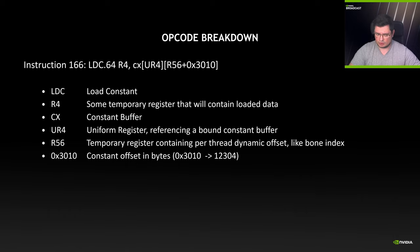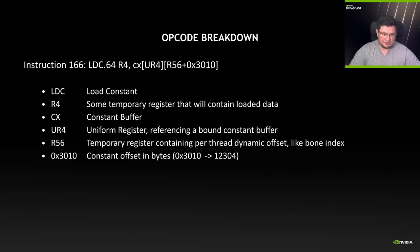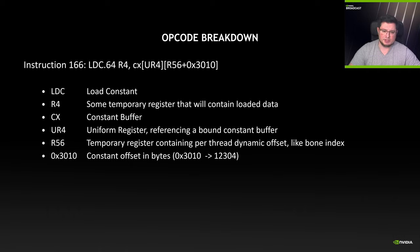LDC loads some kind of constant buffer into R4, while instruction 196 FMO requires register R4 to perform a multiplication. Looking closer at instruction 166 and its opcode: LDC is the load constant instruction; R4 is the temporary register where the data from the constant buffer will be loaded; CX indicates it's a constant buffer; a uniform register references a specific constant buffer; and R56 is another temporary register which is different or dynamic per thread — and this is exactly what is causing the LDC divergence.